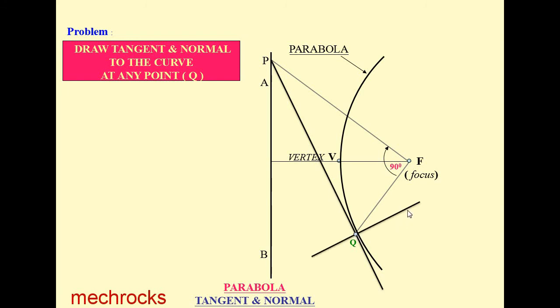This PQ line and this line should be perpendicular to each other. The angle is 90 degrees. Name this as Tt - the tangent you name as Tt. And this line name as Nn. Nn represents the normal, Tt represents the tangent.